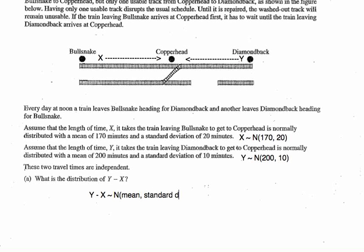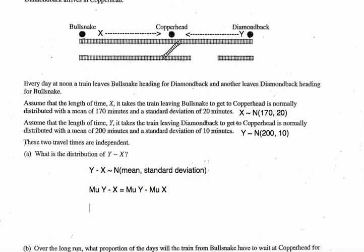We just need to figure out the mean and the standard deviation. The mean of Y minus X is simply Mu_Y minus Mu_X — we can subtract them directly. For the standard deviation, we need to start with the variance. Because the travel times are independent, we can add the two variances. Even though this is defined using subtraction, subtraction is really adding an opposite, so we still combine all the variability of Y and X together by adding the variances.